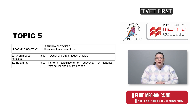Whereas the old syllabus specified applying the Archimedes principle to practical problems, the new topic 5 merely requires that the principle be described. The new outcome deals with calculations of the buoyancy of different shapes.